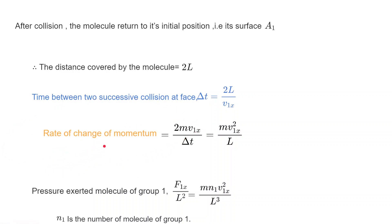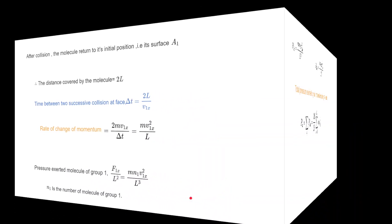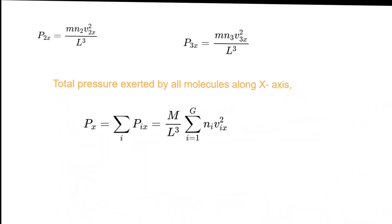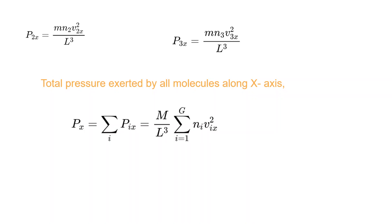We know the rate of change of momentum is called force, so the force is equal to mv₁ₓ²/l. The pressure exerted by the molecule in group 1 is equal to F₁ₓ/l² — that is, force divided by area. So the pressure of group 1 is n₁mv₁ₓ²/l³, where n₁ is the number of molecules in group 1.